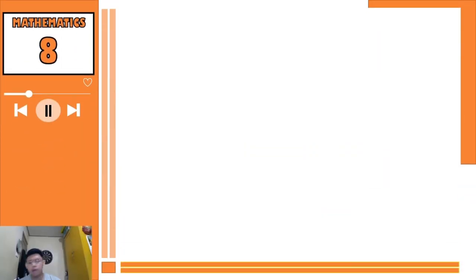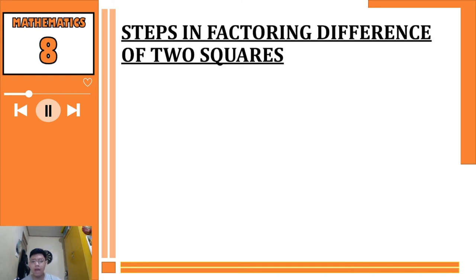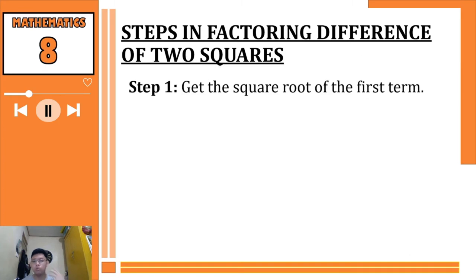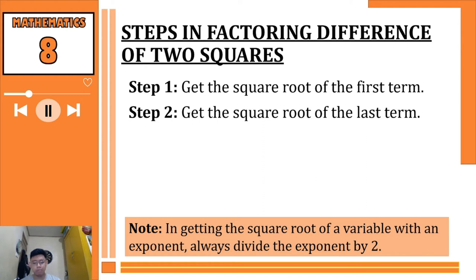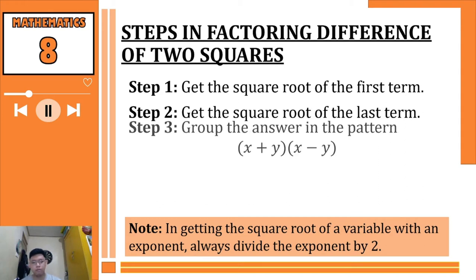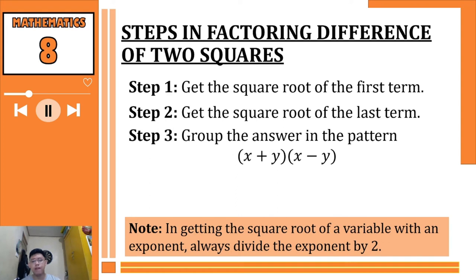Now let's talk about how we factor a difference of two squares. There are different steps. Step 1 is to get the square root of the first term. When taking the square root of a variable with an exponent, always divide the exponent by 2. Step 2 is to get the square root of the last term using the same procedure. The last step is to group the answers in two pairs: one group will be (x + y) and the other will be (x - y), forming the addition group and the subtraction group.